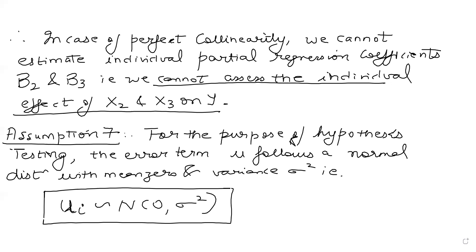Using these seven assumptions, in the next lecture we will actually perform the OLS procedure for the three-variable linear regression model. We will look at the sample regression function, build the residual sum of squares, and optimize over it. I hope all students have enjoyed this lecture. For any doubts, you can unmute your mics, call, or email at divineschoolofeconomics@gmail.com.